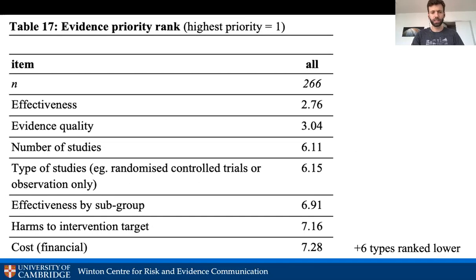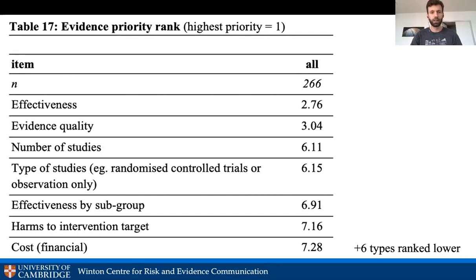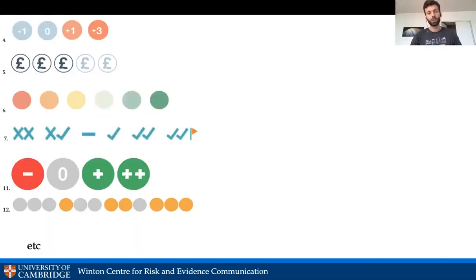There are many kinds of information you could present about an intervention — evidence type, and so on. Closer to priority number one, the results showed that two types of evidence had the highest priority: effectiveness (does it work?) and evidence quality (how good is our evidence?). Everything else was secondary. That's a clear signal to policymakers: those are the two things people most want to hear about.